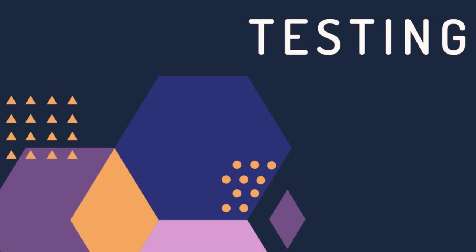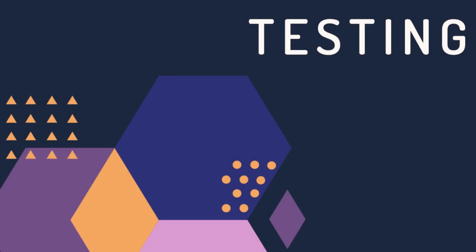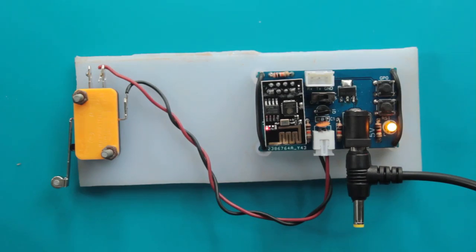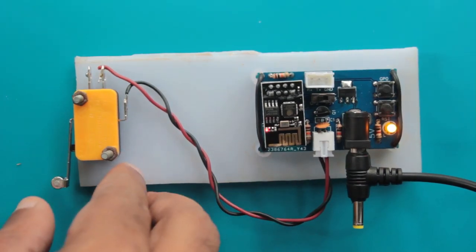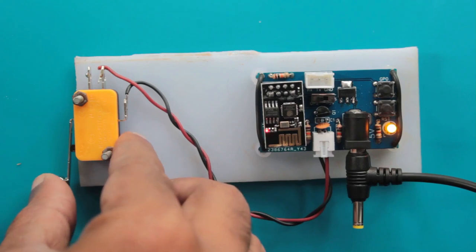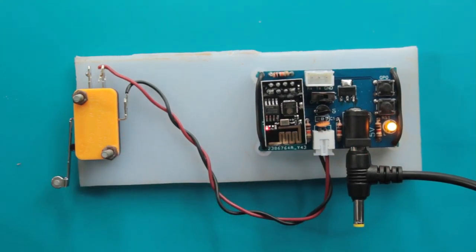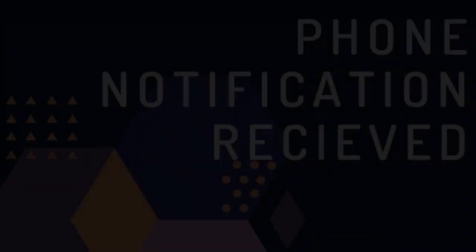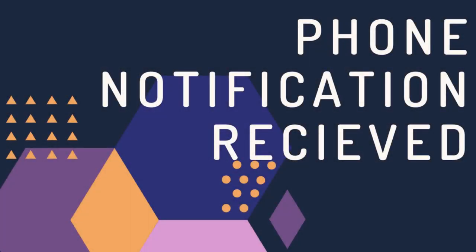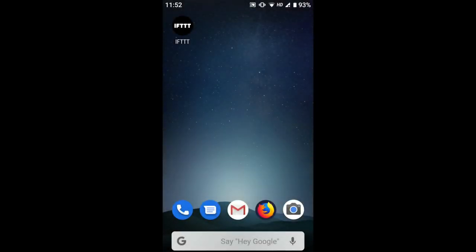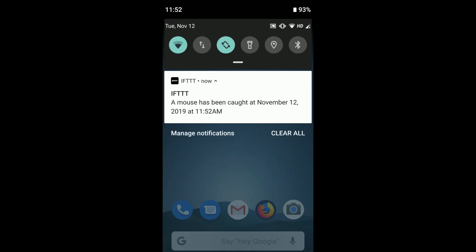Before we can install the acrylic and the electronics on the mouse trap, we should test it a couple of times. You can manually trigger the notification by pressing the limit switch. We can check the phone on which IFTTT is configured if a notification is received. Check the video description to understand how to debug the notification gadget.